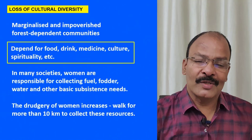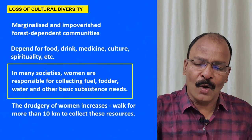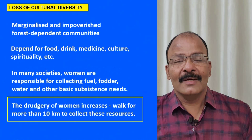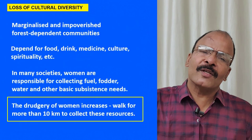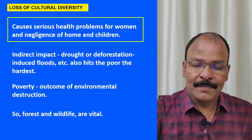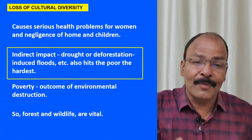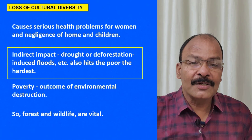In many societies, females collect firewood and water from forests. If the forest is cleared, they have to walk long distances to get these resources, increasing drudgery and causing serious health problems for women. Children are also neglected at home. Indirectly, deforestation can lead to droughts and floods — when trees are cut, water from mountainous areas comes down at greater speed and hits the poor the hardest.